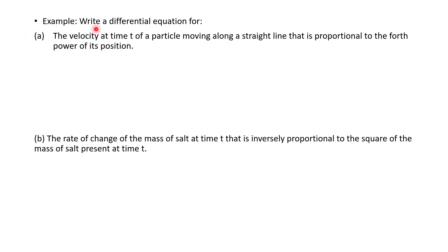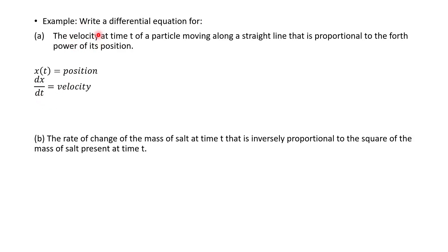Let's write a differential equation for the following situations. First: the velocity at time t of a particle moving along a straight line is proportional to the fourth power of its position. We let x(t) be our position, so x depends on t. The derivative of position is velocity, so dx/dt equals some constant of proportionality k times x to the fourth power. That's our differential equation.